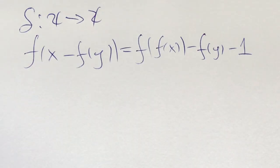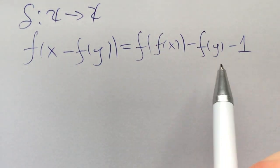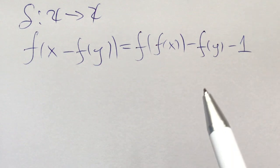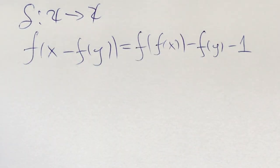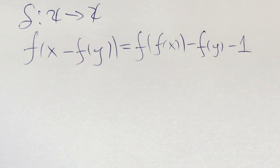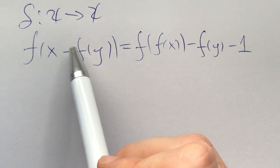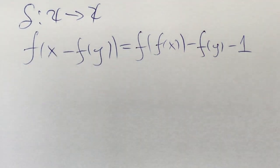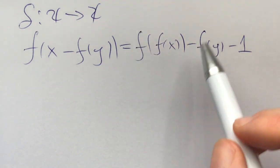We have a function from the integers to the integers which satisfies this equation. Let's pause and look at the function before plugging anything in. What you have is a constant outside of the f's, and none of the variables are outside of the f's. At first glance, this seems like it will be difficult to prove an injection, but we don't know just yet.